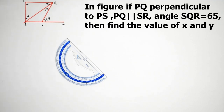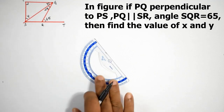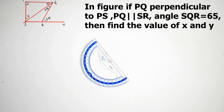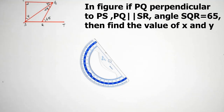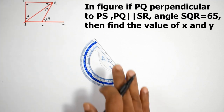Hello viewers. Aditha Jodhiyam. In the figure, PQ is perpendicular to PS, PQ parallel to SR, and angle SQR is equal to 28 degrees and angle QRT is equal to 65 degrees. Then find the value of x and y.